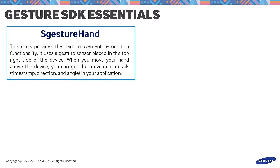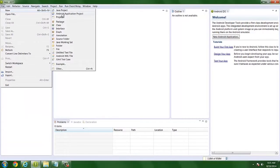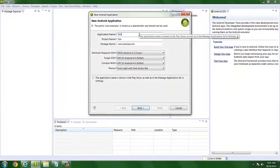SGestureHand uses a gesture sensor placed in the top right side of the device. When you move your hand above the device, you can get movement details like timestamp, direction, and angle in your application. Note that the hand movement is only captured when the screen is on. This class contains two nested classes: SGestureHand.ChangeListener, an interface that receives hand gesture events, and SGestureHand.Info, a class that contains the hand gesture event information and provides methods to access it.